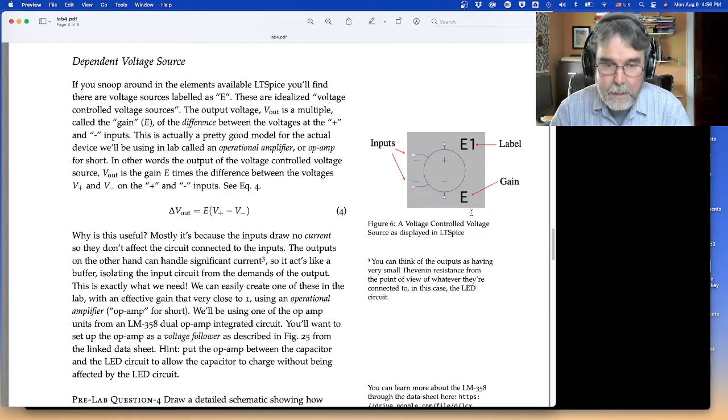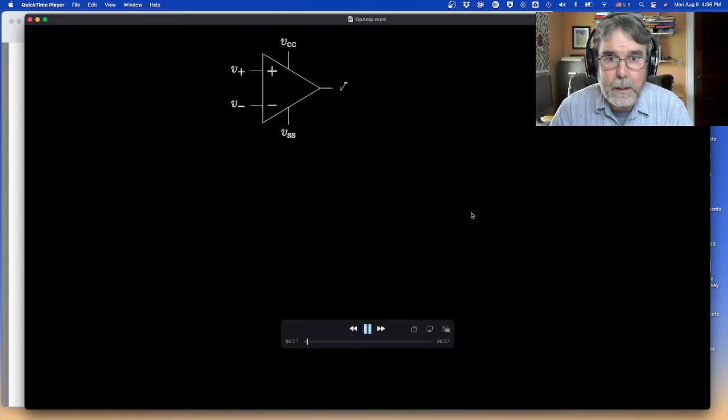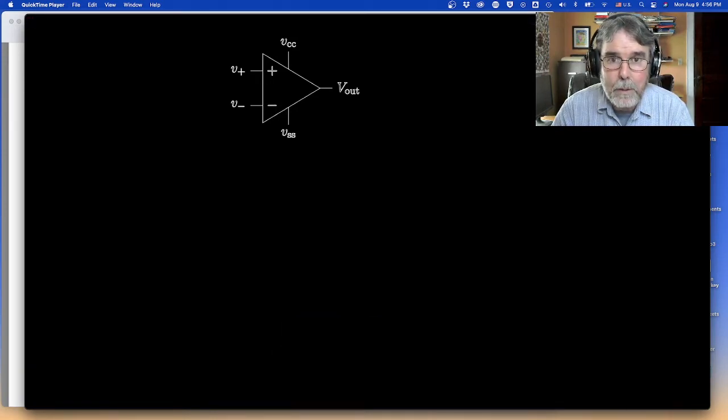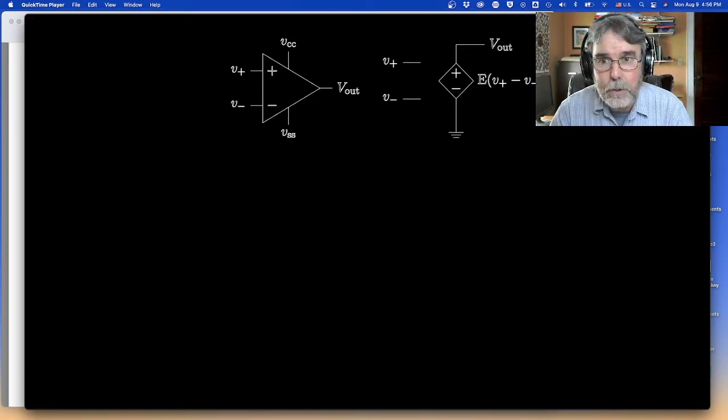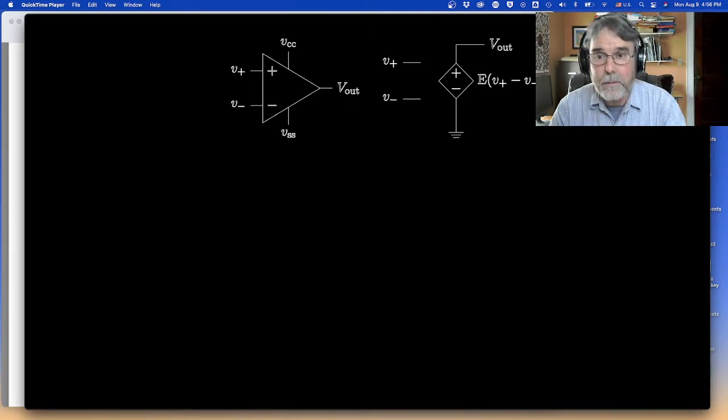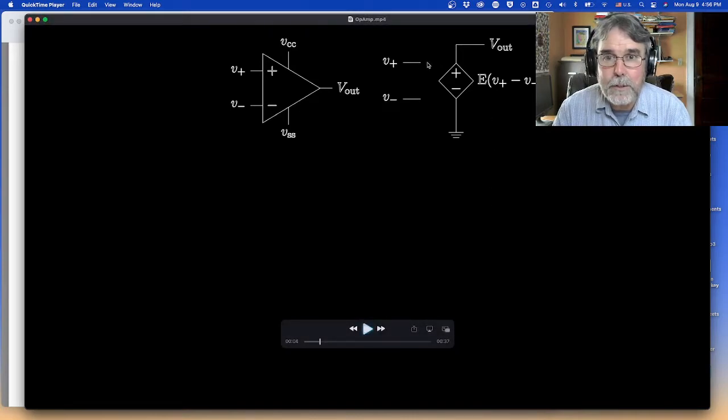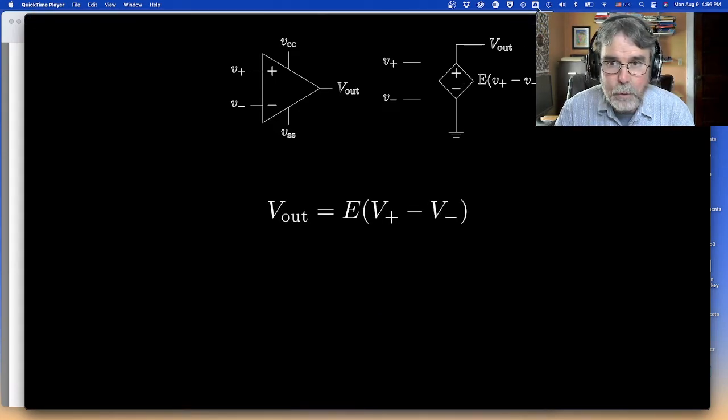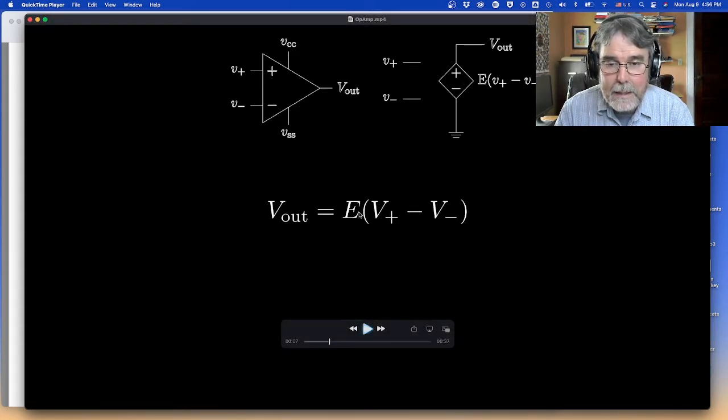So I want to imagine we have a, let's talk about an op amp and how we might model that. We're going to model it as a voltage-controlled voltage source. The output of the voltage-controlled voltage source is a number E times the difference. We have these inputs here, the difference between the inputs. And so you can think of it like this. Basically, the output voltage is the gain E times the difference between the input voltages. And that's really all there is to it.